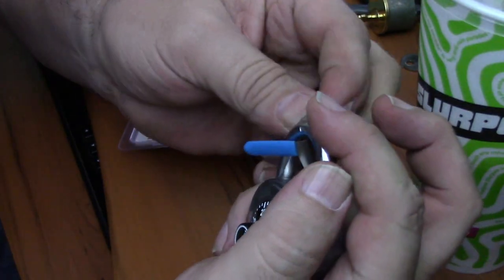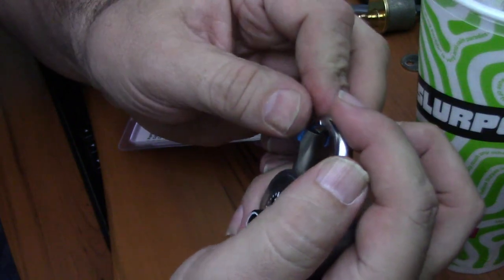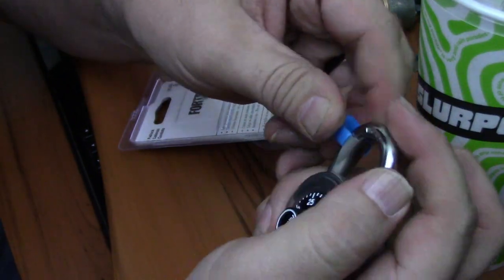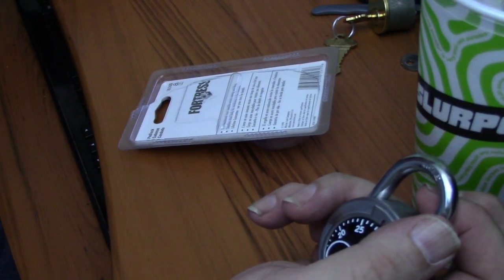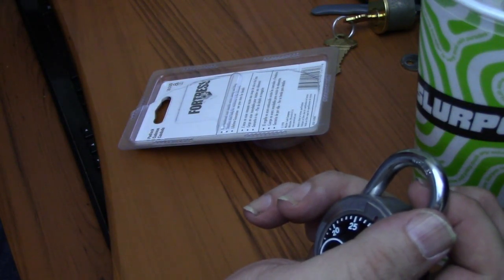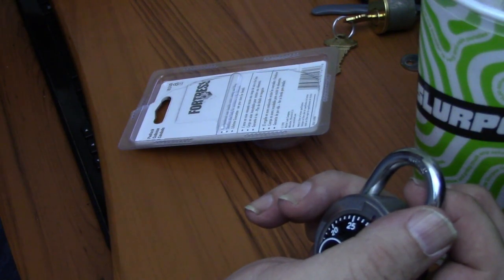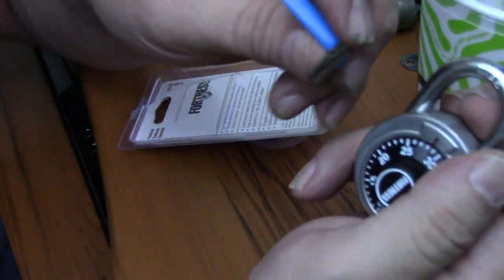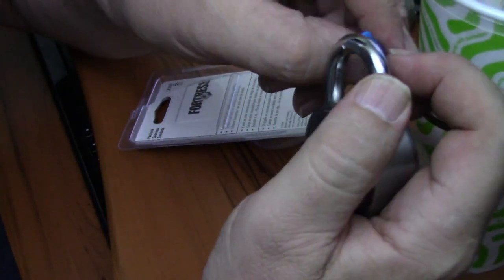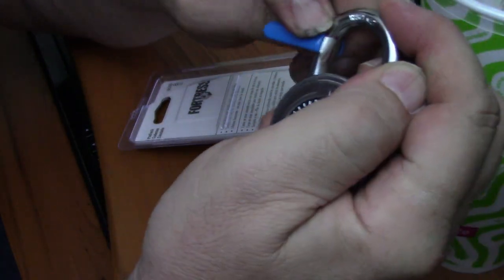I might have to order some good ones from Covert Instruments and see if they work. Where's the thinnest one I can find here. There's like 12 of them in this package. It's like $6 I think for all of these. But as you can see I can't even get it down in.